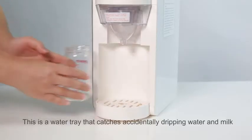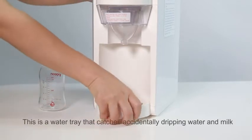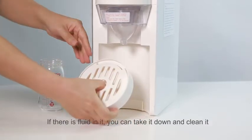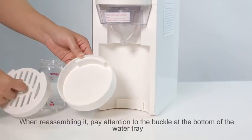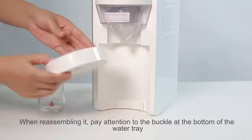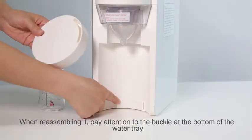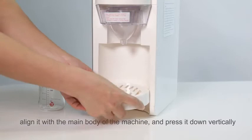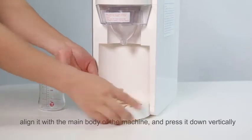This is a water tray that catches accidentally dripping water and milk. If there is fluid in it, you can take it down and clean it. When reassembling it, pay attention to the buckle at the bottom of the water tray. Align it with the main body of the machine and press it down vertically.